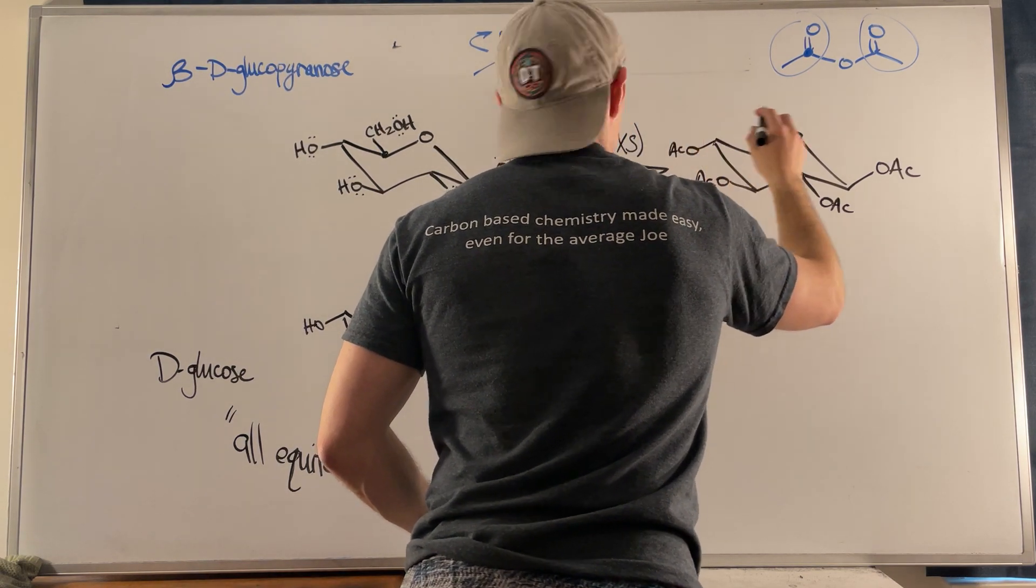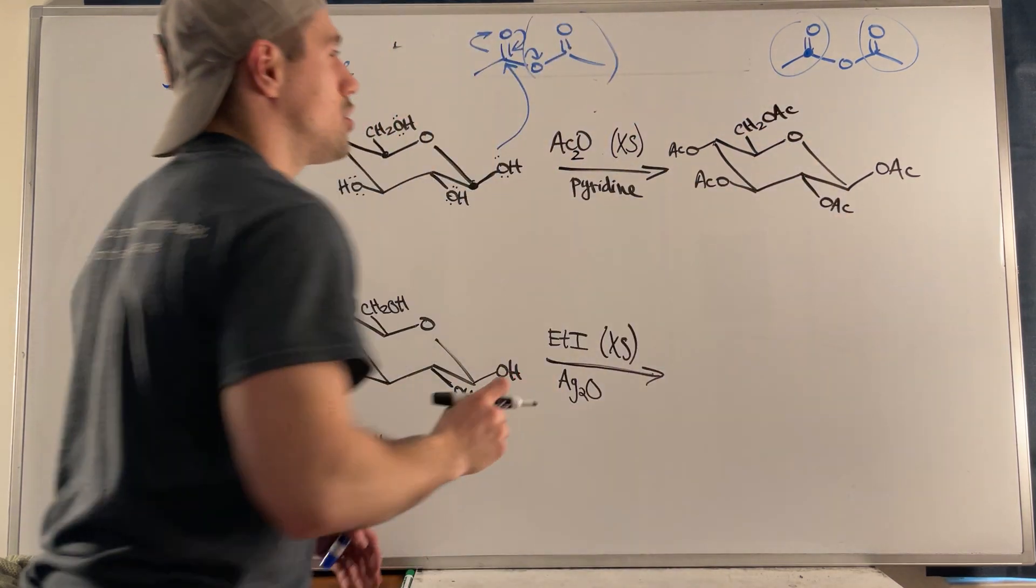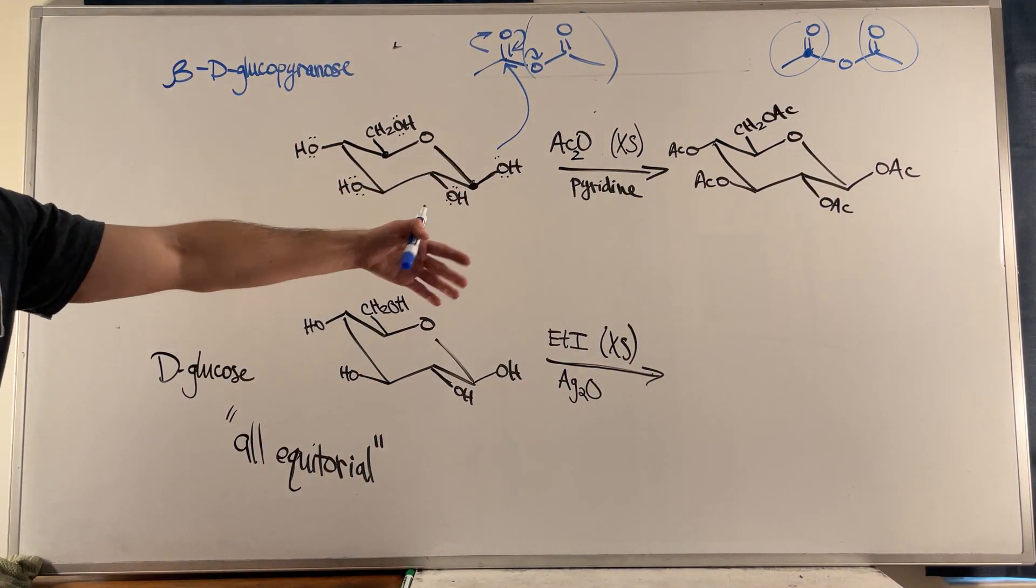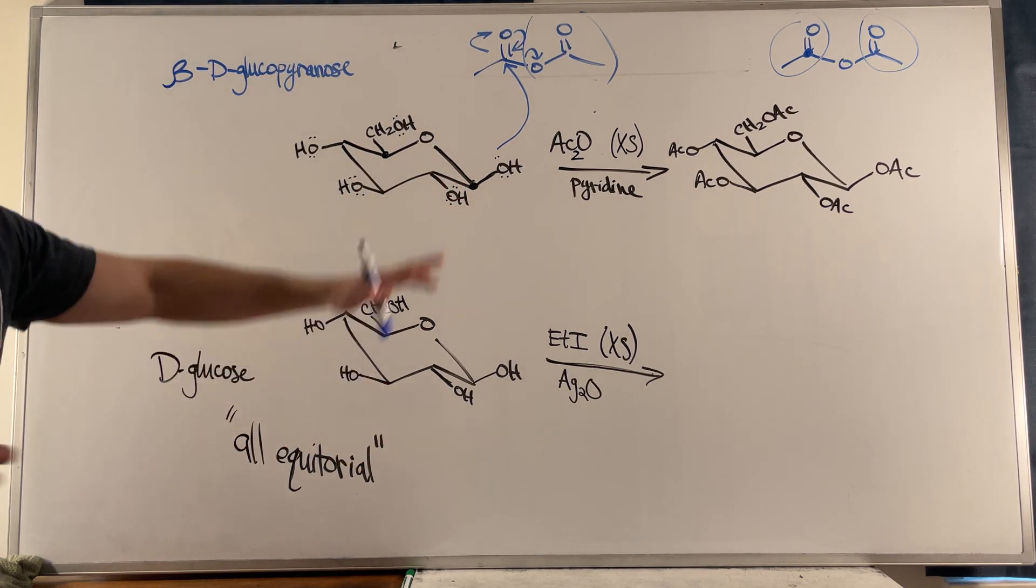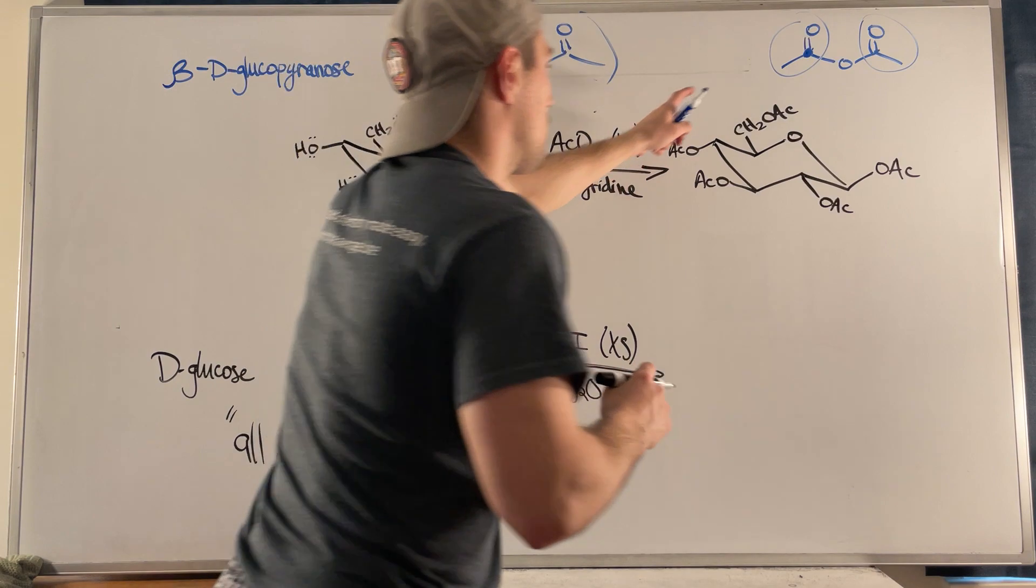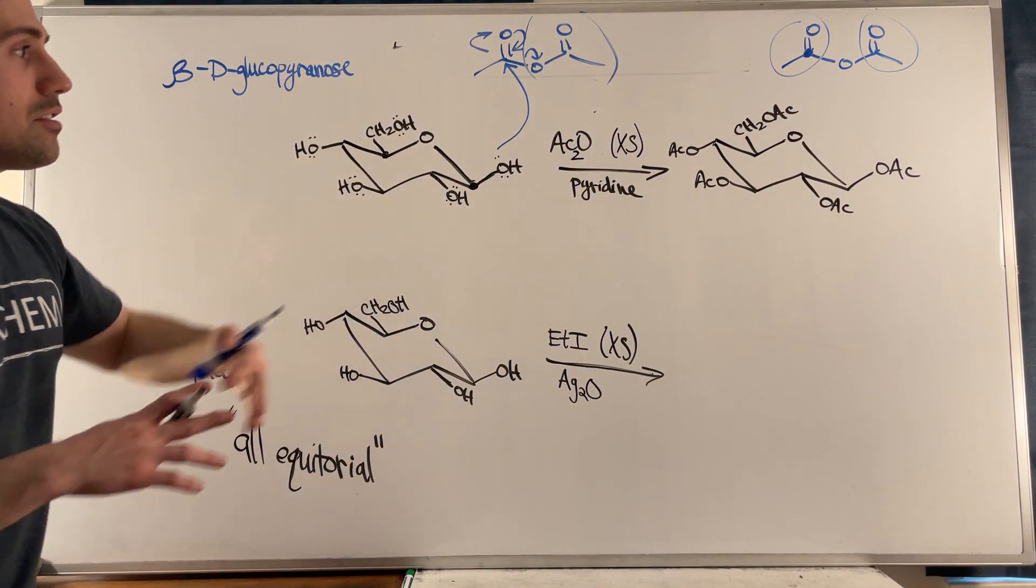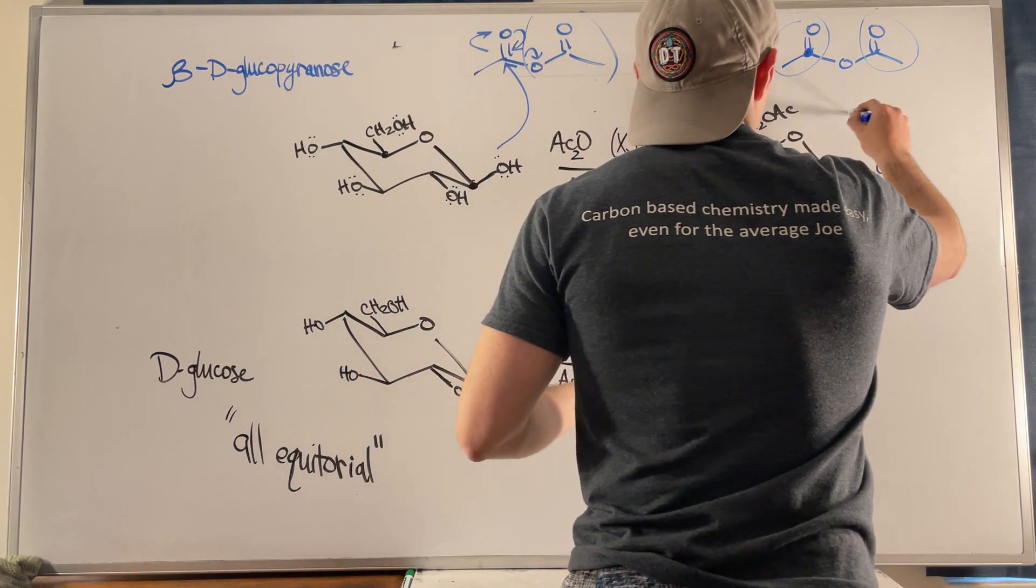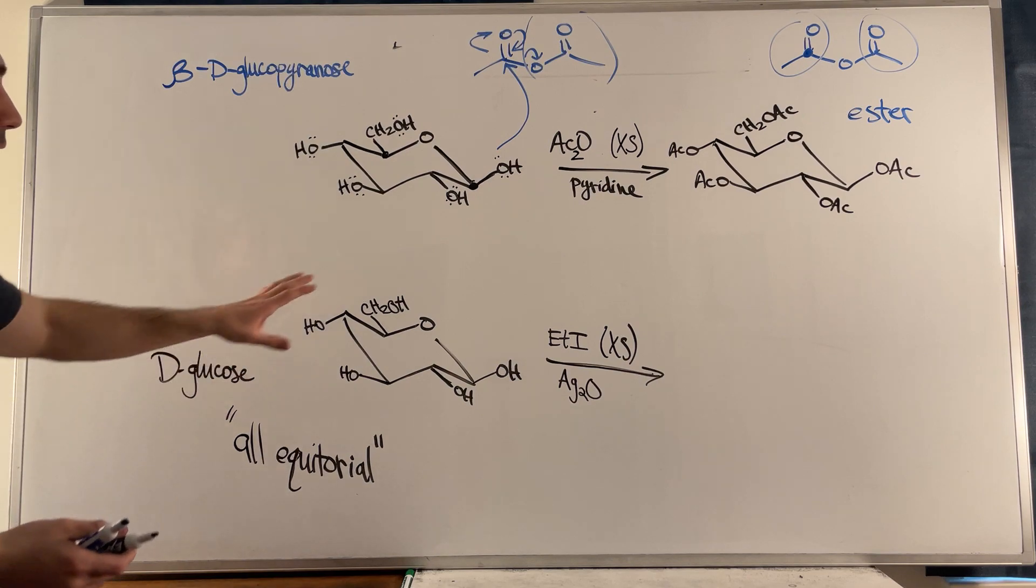And again that's possible because we have excess. No one would ever give you like two or three equivalents and ask you to pick one or the other - you'd actually have to run the experiment in real life. But if you have excess, you can bet that all of these oxygens will go through the addition elimination mechanism and you'll have an ester product. Right, we have many esters in there.